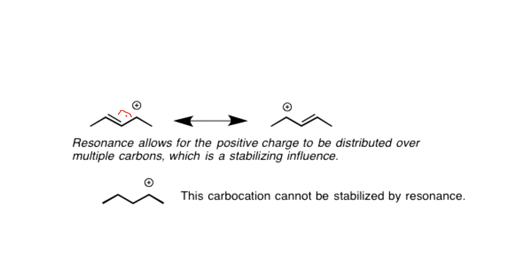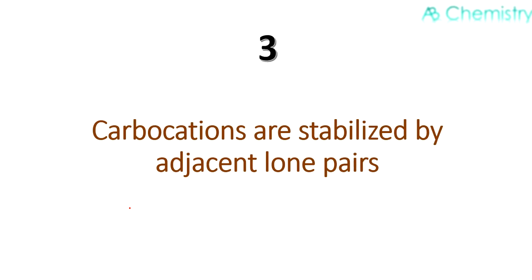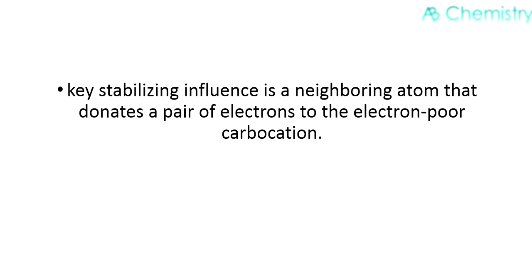Let us go to the third factor. Carbocations are stabilized by adjacent lone pairs. The key stabilizing influence of neighboring atoms is that they donate a pair of electrons to the electron-poor carbocation.